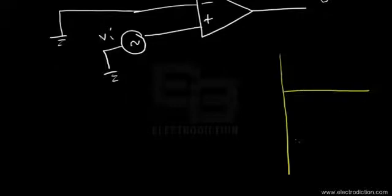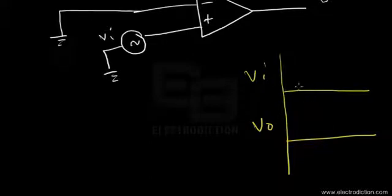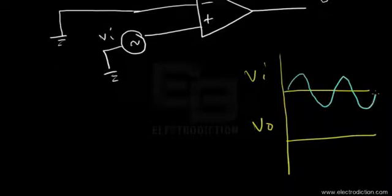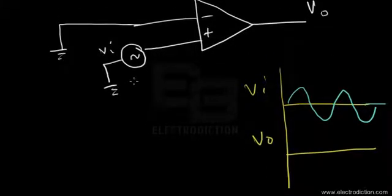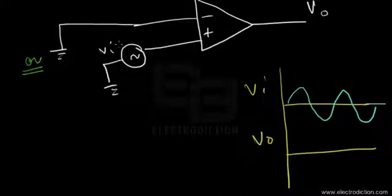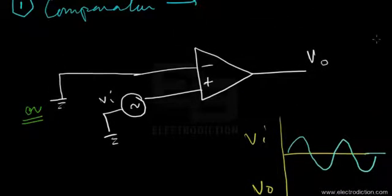If we go forward and draw the graph of this circuit, we'd find something like this. Here's the graph — here's the input voltage and there's the output voltage. The input voltage has a sinusoidal waveform. The comparator basically compares the two voltage levels on its two input terminals, comparing the voltage level of VI with the ground voltage.